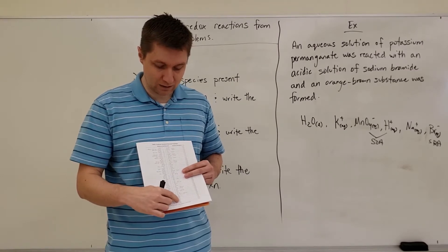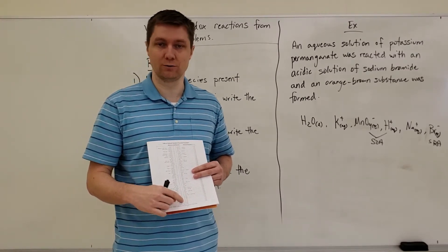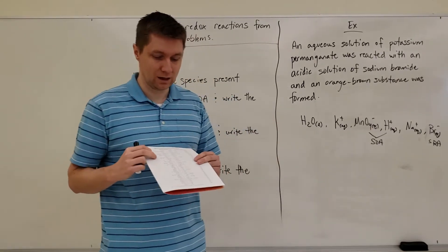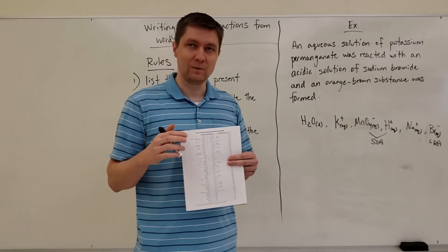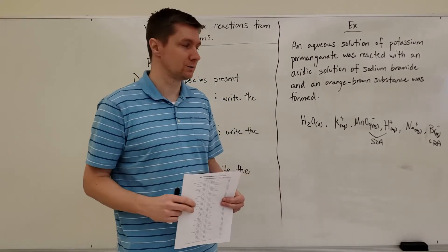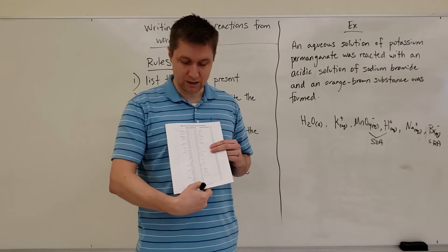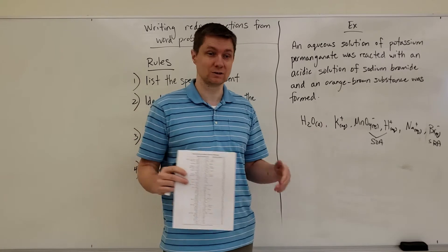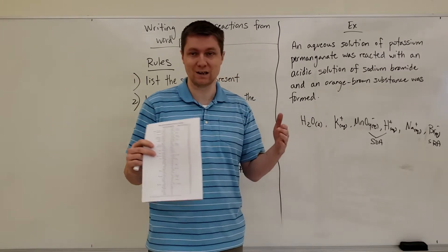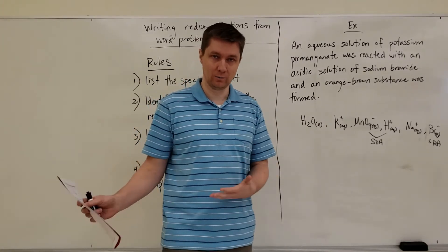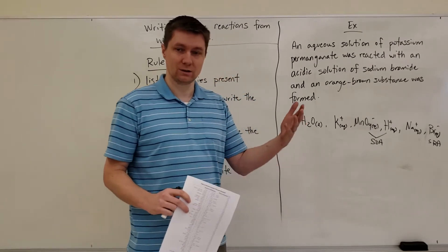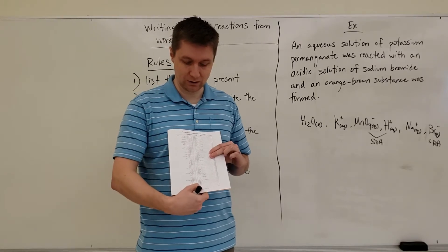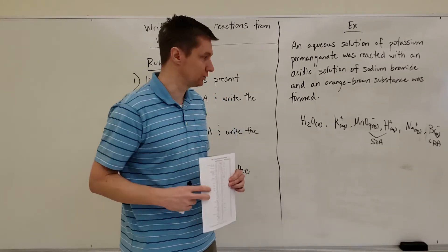Some students ask: what about K solid near the bottom of the chart — isn't that a strong reducing agent? The answer is that ions and elements are two different things. The chart lists K solid, but I have K⁺ (aq) in my list — those are two different substances. While it's the same atom, one is an ion and the other is an element, so I cannot choose K solid.